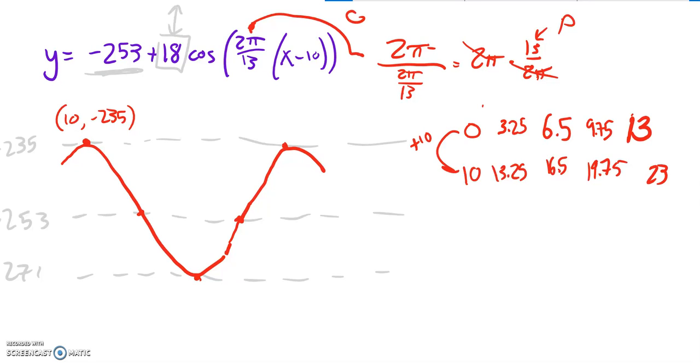The first one I already know is 10, and it's at that height. My next one is 13.25, at this height of negative 253. My next one is 16.5, at negative 271. Then I've got 19.75, back at the midline of negative 253. And then this max here is at (23, negative 235).